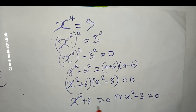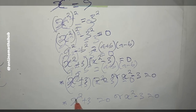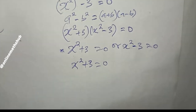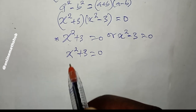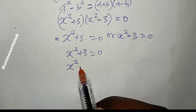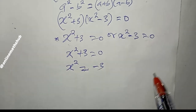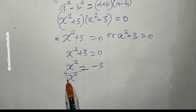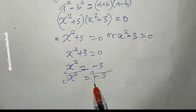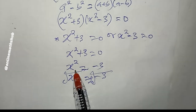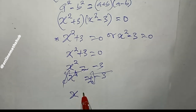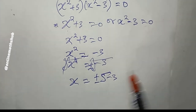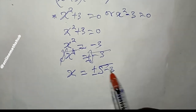Taking the first case: x² + 3 = 0. Moving 3 to the right by subtracting from both sides gives x² = −3. Taking the square root of both sides to eliminate the square, I get x = ±√(−3).